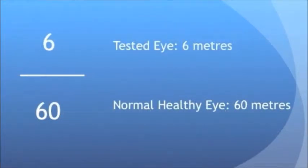Here is an example. A visual acuity of 6 over 60 means that the tested eye can only see at 6 meters, while the normal eye can see as far as 60 meters. The bigger the number at the bottom, the poorer the visual acuity of the tested eye.